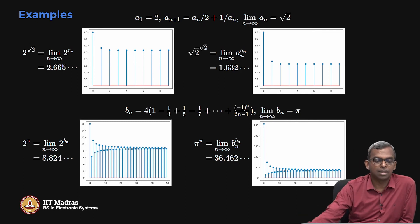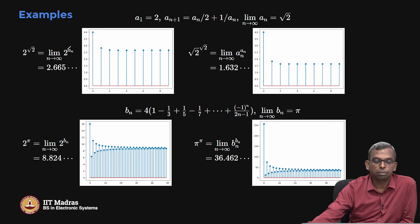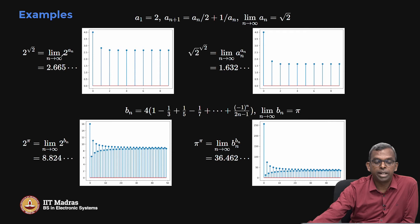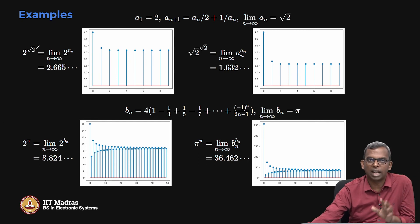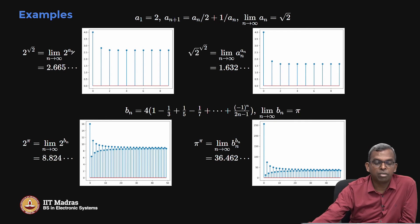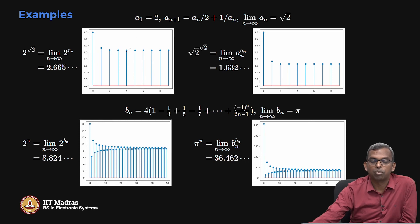Let me start with the example of 2^(√2). For root 2, I have the sequence a_{n+1} = a_n/2 + 1/a_n, which converges to root 2. To evaluate 2^(√2), I compute the limit as n tends to infinity of 2^(a_n). On your calculator, 2^(√2) gives approximately 2.665, and you can see the sequence 2^(a_n) starting off at 4 and quickly converging to around 2.665.